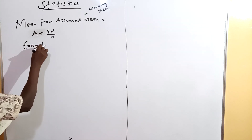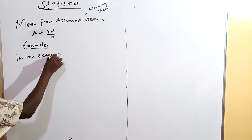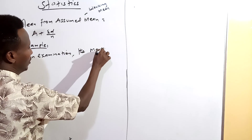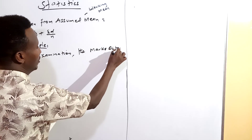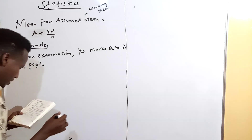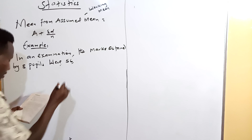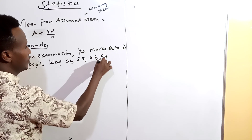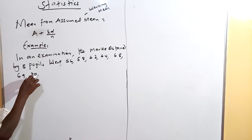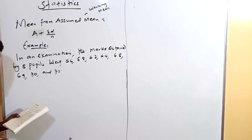This is Example 1. In an examination, the marks obtained by eight people are: 56, 58, 63, 64, 68, 69, 70, and 72.